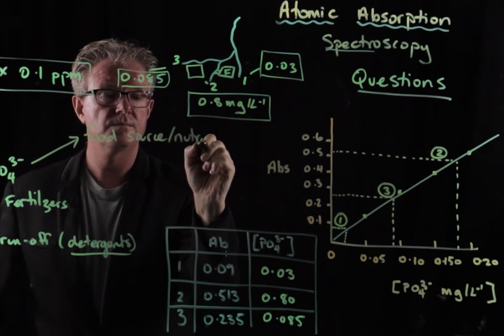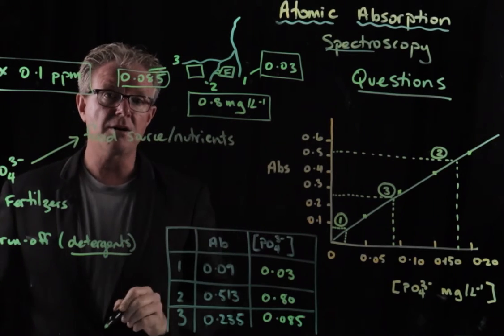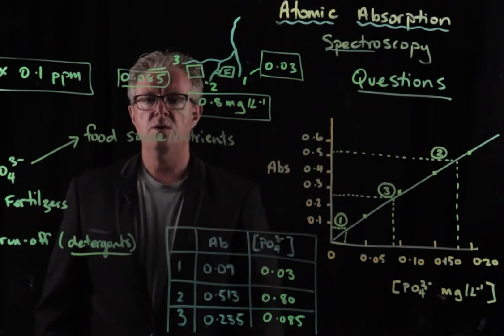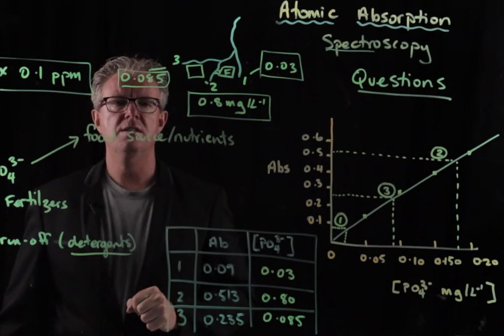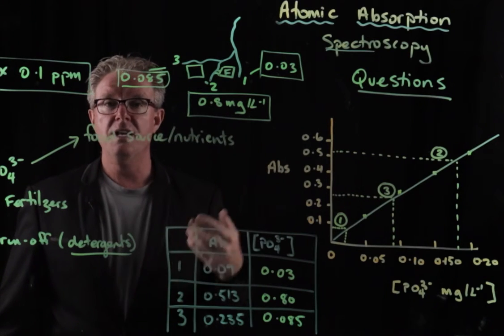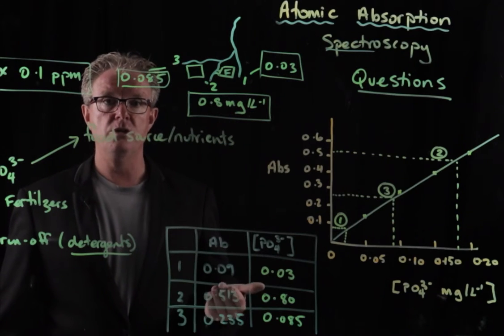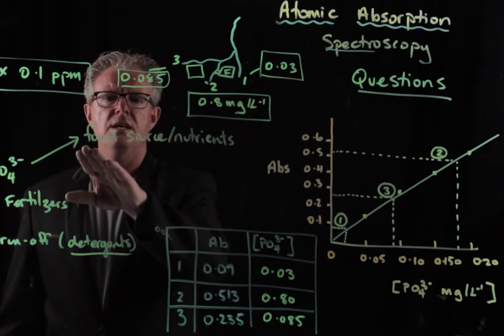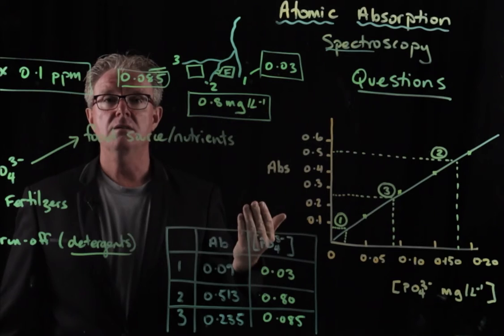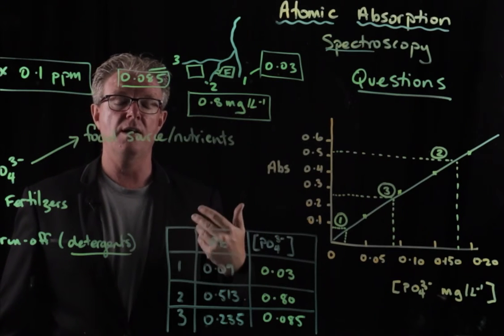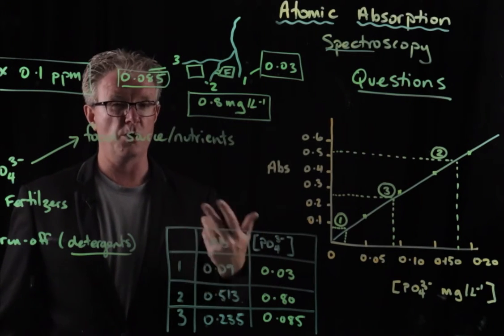Well, phosphates are used as a food source, that is nutrients for algae. And so if the concentration of phosphates increases too much, we then have algal growth and algal blooms. And they measure something called the nitrogen phosphate ratio. And if there's too much of that,